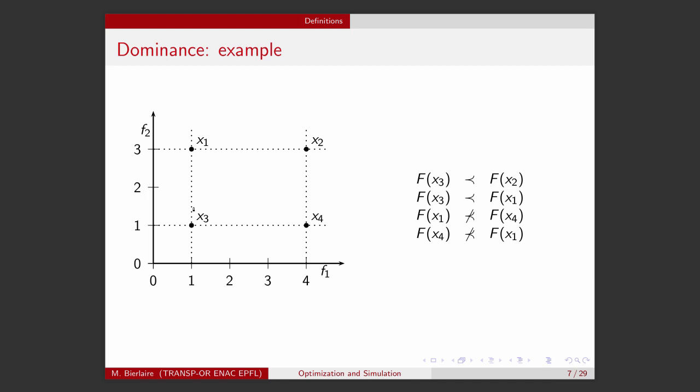If you look at X3 and X2, X3 happens to be strictly better than X2 in both objectives. So, it clearly dominates X2. If we now compare X3 and X1, we see that X3 is better than X1 in both objectives, F1 and F2, and it's strictly better for F2. So, it verifies the definition of dominance. And X3 dominates X1.